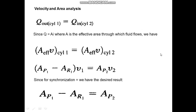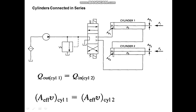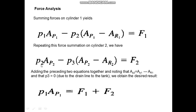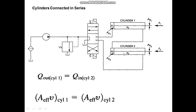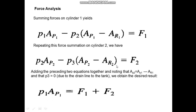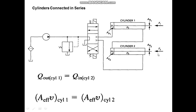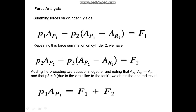Similarly, for cylinder 2, the cylinder force P2 × AP2 acts from left to right (positive). The force on the rod end side is P3 × (AP2 − AR2), acting from right to left (negative). The external load F2 also acts from right to left, becoming positive when shifted to the other side. This gives the force summation equation for cylinder 2.